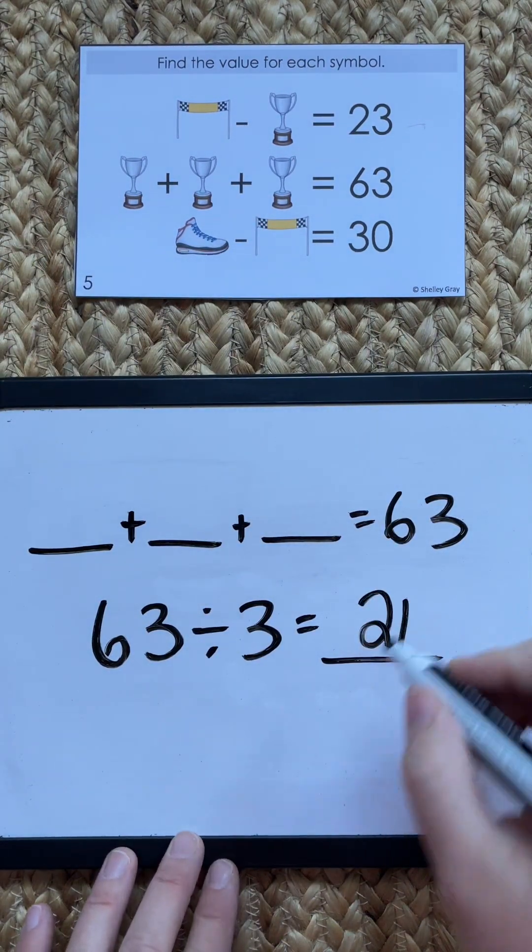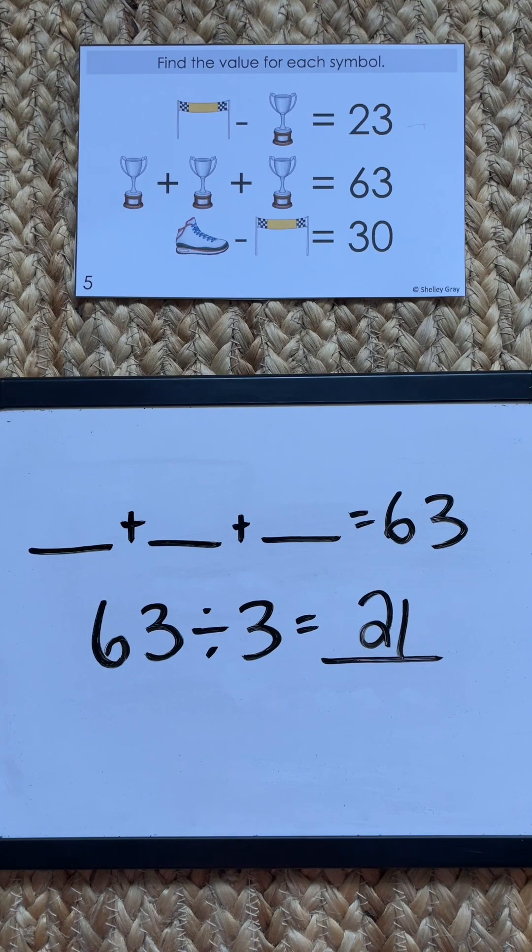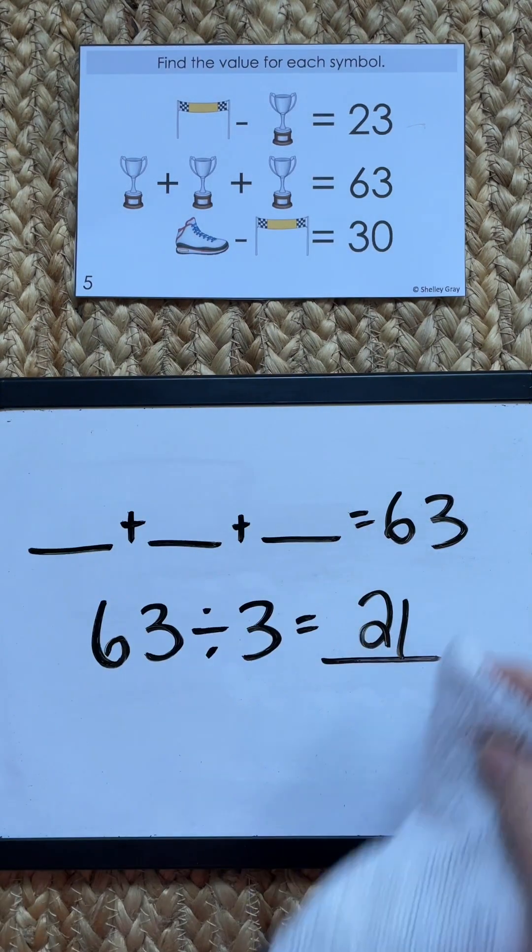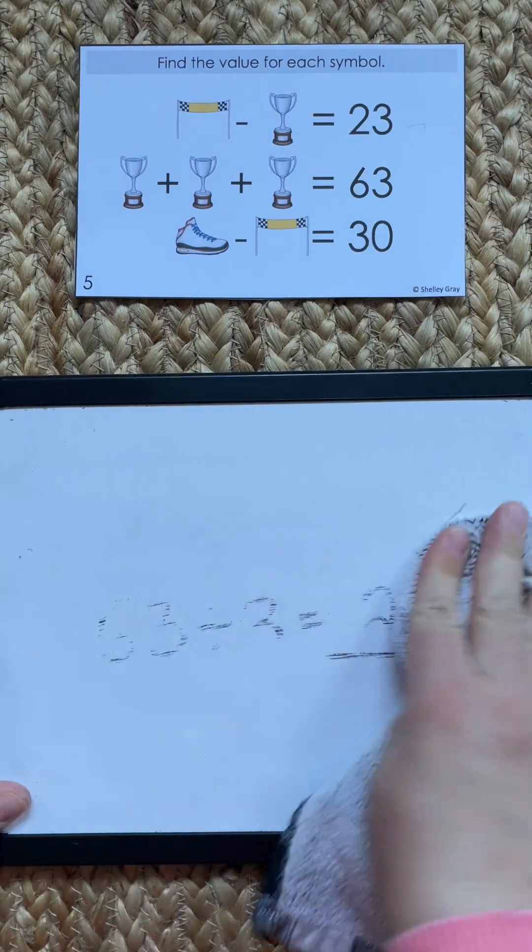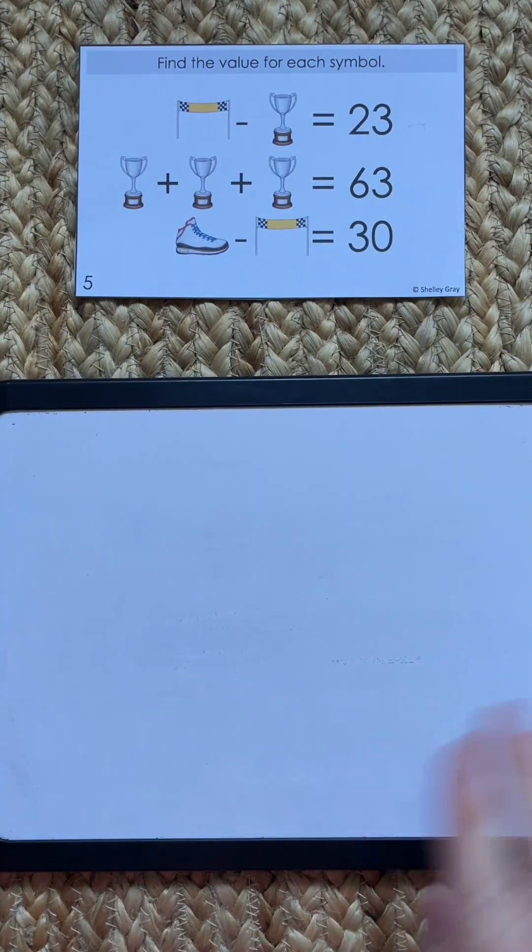So in this case it's 21. Okay, so now we know the value of the trophy. The next line that we want to do is the very top line to figure out the value of the flag.